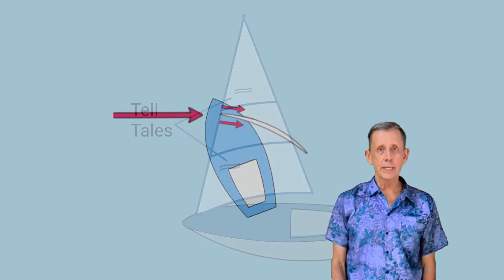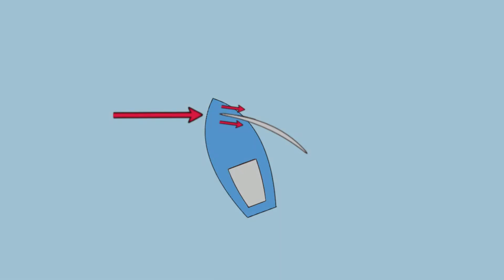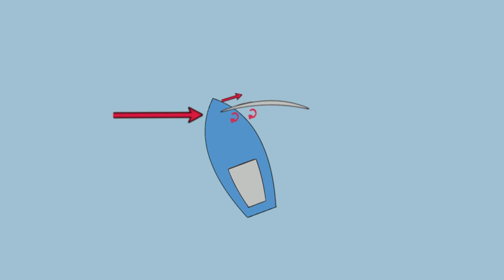Now let's look at how we can adjust the jib sheets to get both the inner and outer telltales flying smoothly. We'll talk about the points of sail in a future lesson, but in this diagram we're sailing upwind on a close reach. As you can see, the sail is trimmed so that the luff of the sail is pointing directly into the direction of the oncoming wind. Let's look at what happens if we ease the jib sheet out. I'm exaggerating this so you can more easily see the effect. There's plenty of air pressure on the outer side of the sail to keep the outer telltale flying smoothly, but there's turbulence in the airflow on the inner side of the sail. So the inner telltale starts to flutter in that turbulence, and the turbulence reduces the efficiency of the sail to generate drive. So to get the inner telltale flying smoothly again, you need to harden your sheet back in. When you see the inner telltales fluttering, harden the sheets in.